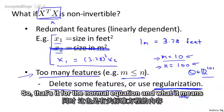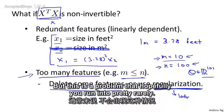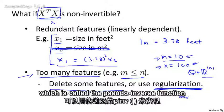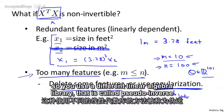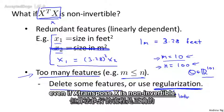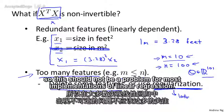So that's it for the normal equation and what it means if the matrix X transpose X is non-invertible. But this is a problem that hopefully you run into pretty rarely. And if you just implement it in Octave using the pinv function, which is called the pseudo-inverse function. So if you use a different linear algebra library, it's called a pseudo-inverse. But that implementation should just do the right thing, even if X transpose X is non-invertible, which should happen pretty rarely anyway. So this should not be a problem for most implementations of linear regression.